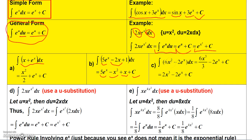For 6x² - 2e^x: integrating 6x² gives 6x³/3, and integrating -2e^x gives -2e^x. Simplifying 6/3 gives 2, so the final answer is 2x³ minus 2e^x plus a constant.